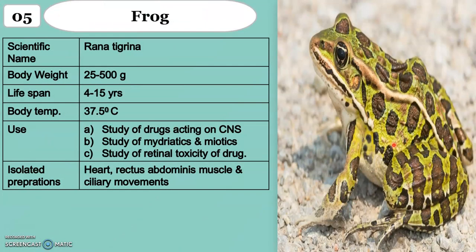Animal Number 5 is frog. Scientific name is Rana tigrina. Body weight: 25 to 500 grams. Lifespan: about 4 to 15 years. Body temperature: 37.5 degrees Celsius. Frog is used for CNS studies, isolation for activity on the heart, mydriatic and miotic effects, and toxicity studies. Isolated parts include the heart, rectus abdominis muscles, and ciliary movements.